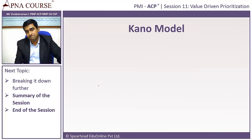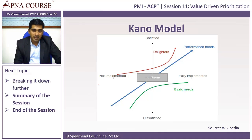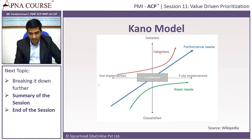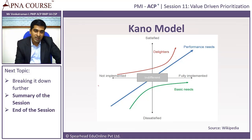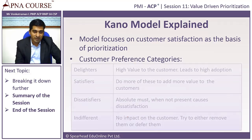Then comes the Kano model. The Kano model takes care of — we will come back to this diagram — but let's look at what the Kano model really looks at. It looks at customer satisfaction as a basis of prioritization. In this case, there is a feature that's not implemented or fully implemented, and there's dissatisfied and completely satisfied. There are four categories: delighters, basic needs, satisfiers, and indifferent.